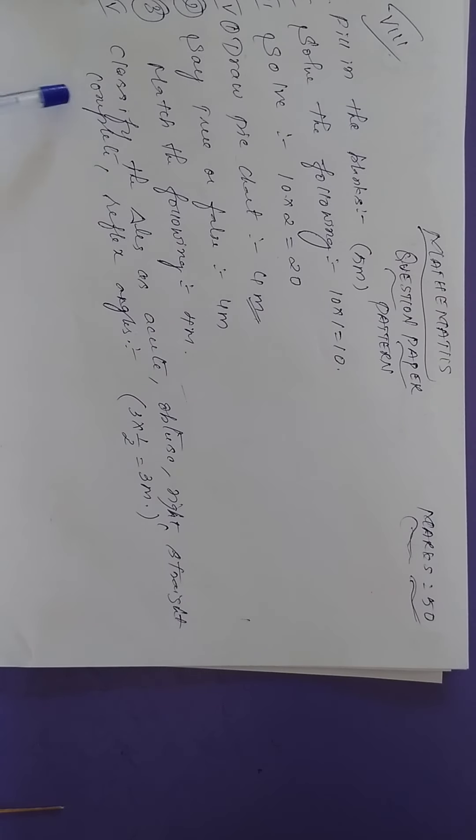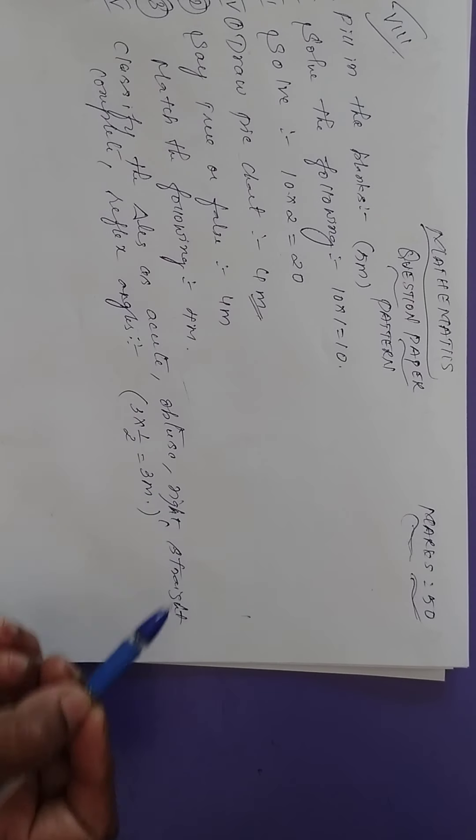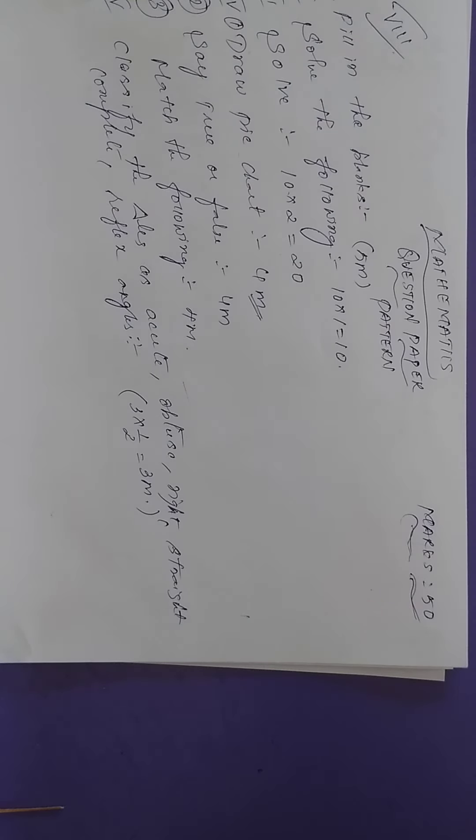Next is match the following, which also carries 4 marks. Next, classify the triangles as acute, obtuse, right, straight, complete, and reflex angles. These are the different types which you are going to classify as acute, obtuse, right, straight, reflex, and complete angles.